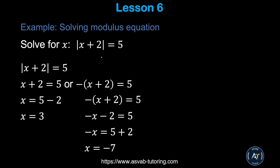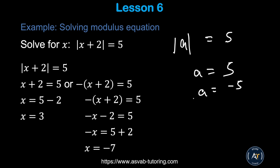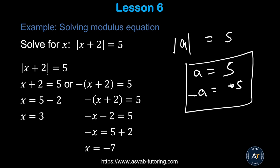Now we'll learn absolute value equations. Absolute value means there's a positive and a negative side: |a| = 5 means a = 5 or a = −5. For |x + 2| = 5: set x + 2 = 5 to get x = 3, and set x + 2 = −5 to get x = −7. So the two solutions are x = 3 and x = −7.